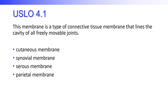This membrane is a type of connective tissue membrane that lines the cavity of all freely movable joints. Is it a cutaneous membrane, a synovial membrane, a serous membrane, or a parietal membrane? Cutaneous is skin, serous membranes line cavities housing organs like the abdominal organs with visceral and parietal peritoneum, and the parietal membrane is closest to the cavity wall. That leaves synovial membrane, which is the correct answer.